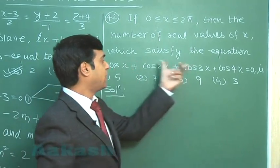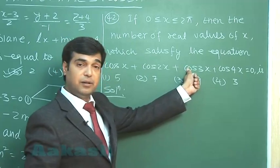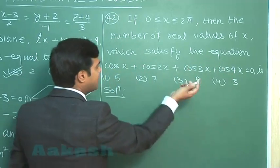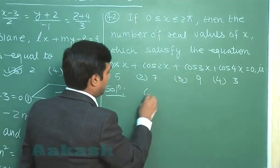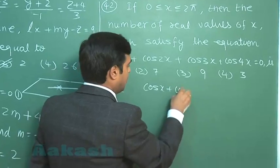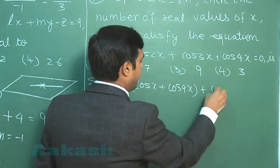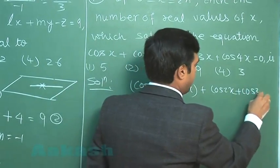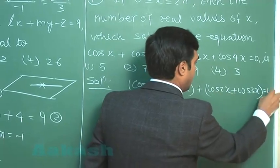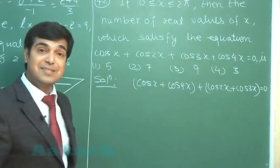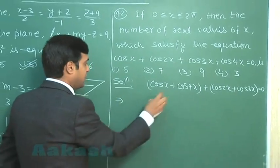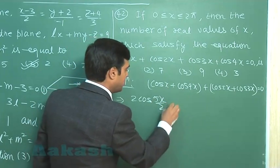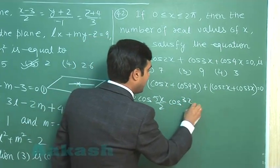We can pair any two terms — first and fourth, or second and third. Let us start with first and fourth. Applying the cos C plus cos D formula, we get 2 cos(5x/2) cos(3x/2), and similarly pairing second and third gives 2 cos(5x/2) cos(x/2).